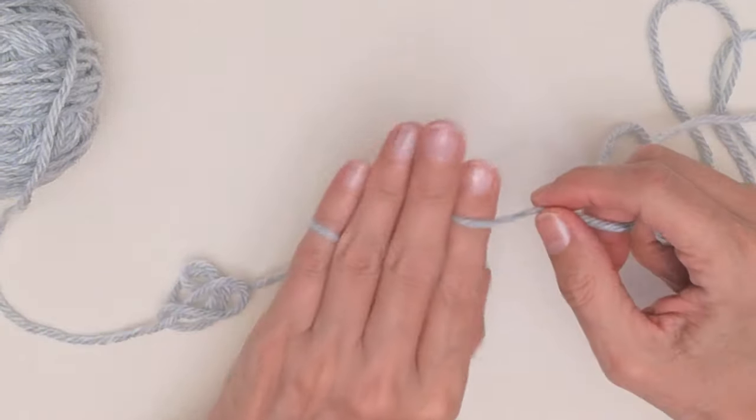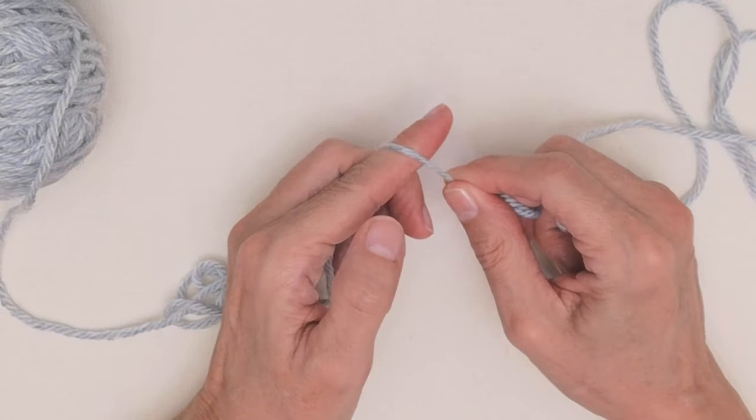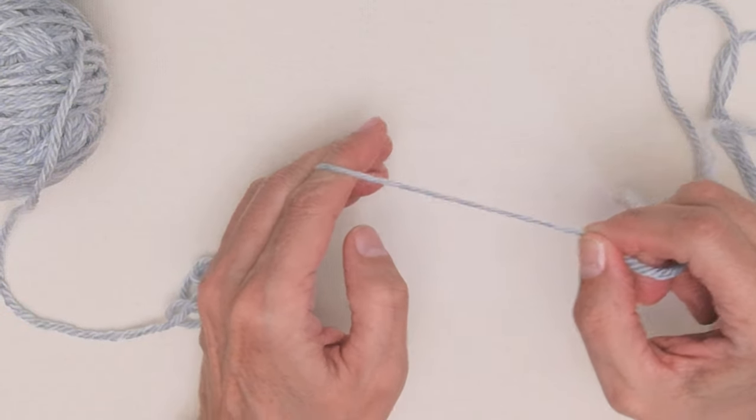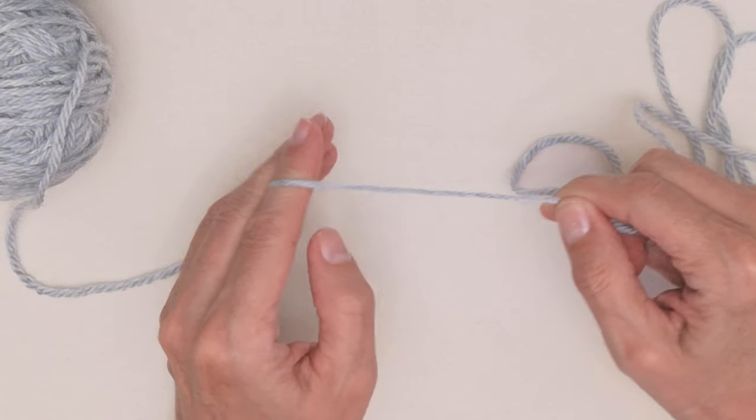The other thing I like about this method is that if you're making a project that requires tighter stitches, you simply grip your hand a little tighter. As you can see, that tightens your tension, which helps you get those nice tight stitches.